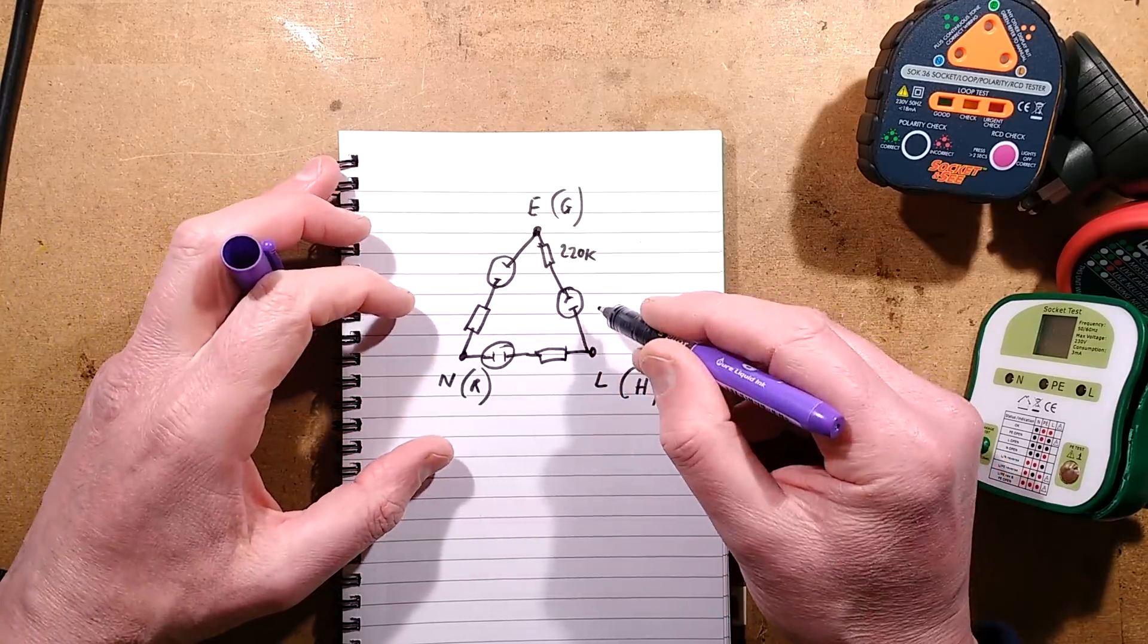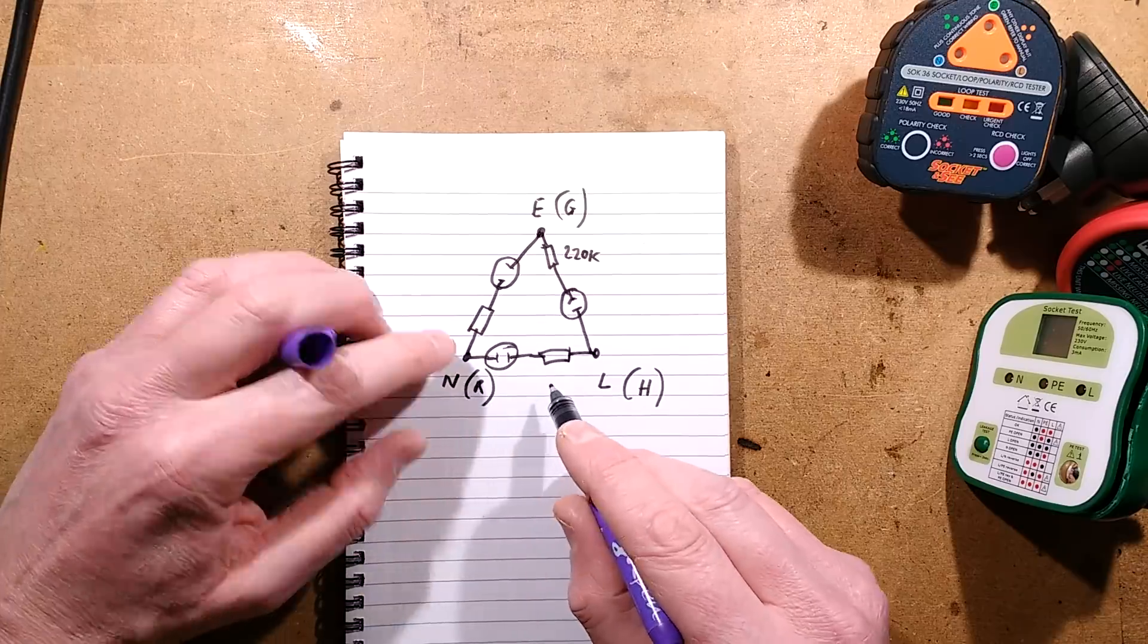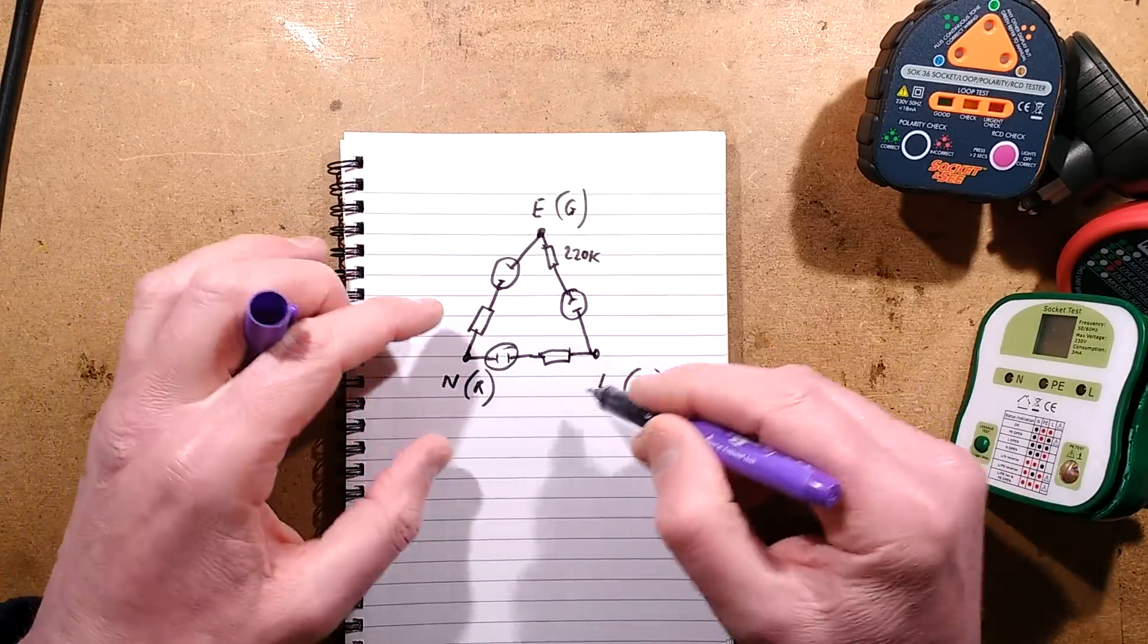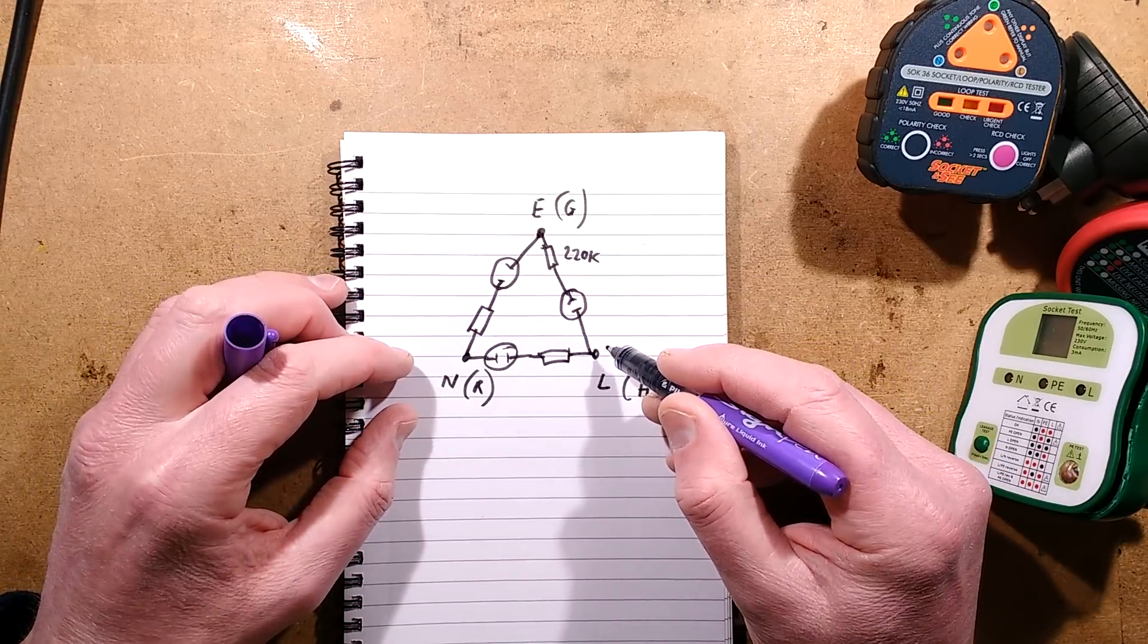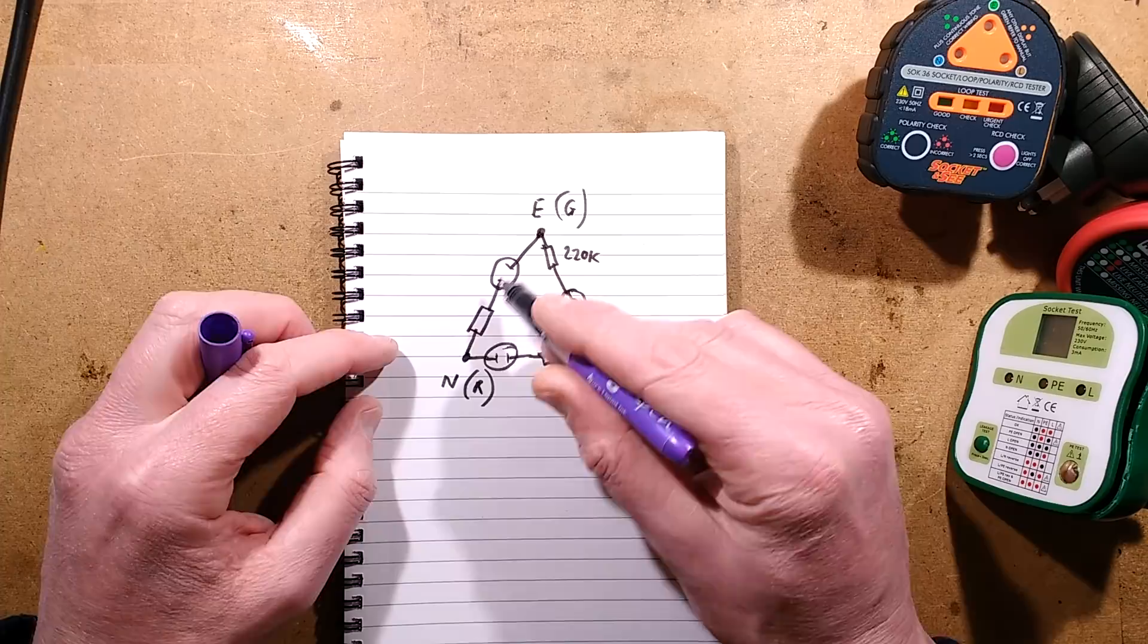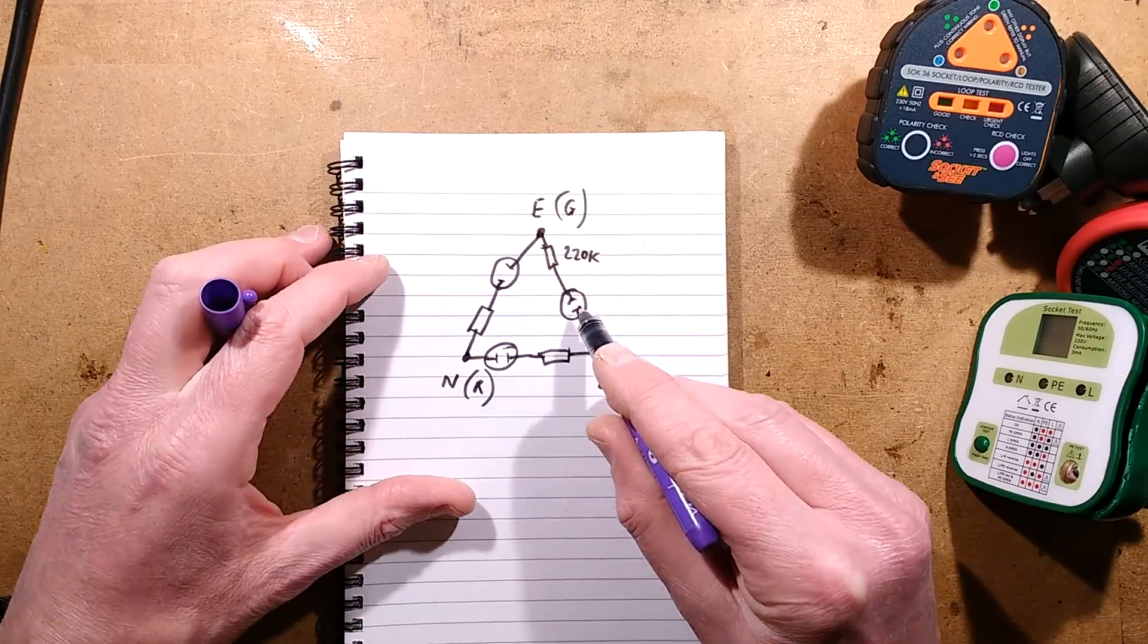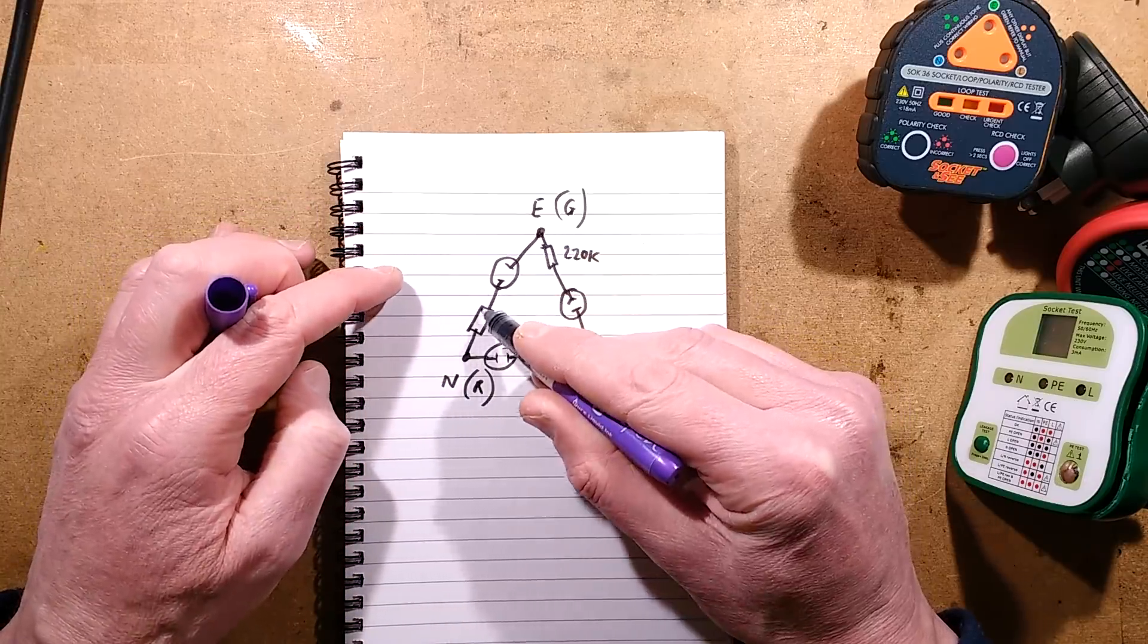A typical other fault that may occur: supposing live and neutral got reversed, then these two neons would light. If it was wired correctly but the earth was missing, you'd tend to get a situation where all the neons would light because if the earth was missing, the current would flow through that neon, but it wouldn't be finding a reference to the earth, so then it would flow through that neon as well to the neutral.